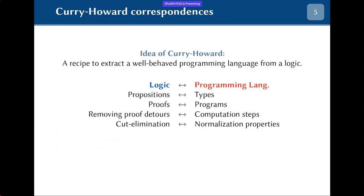What does it mean to generate a type system and programming language from a logic? The idea of Curry-Howard correspondences is that you draw a parallel between propositions in the logic and types in a programming language, proofs in the logic and programs in the programming language, such that the proof-theoretic properties of the logic translate to behavioral properties of your programming language.